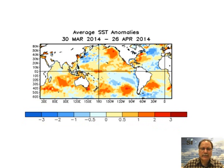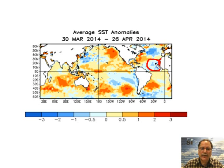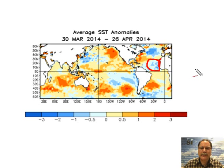Two other areas of interest regarding sea surface temperatures: one is right off the west coast of Africa, where we see an area of blues indicating colder than normal sea surface temperatures. This is crucial because colder than normal sea surface temperatures tend to have an inhibiting role in the formation of tropical storms — and this is the breeding ground for African wave type tropical systems that push off the west African coast, especially in the first half of the tropical season: June, July, and the first half of August.